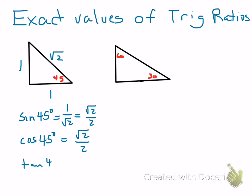The tangent of 45 degrees is the opposite over the adjacent, so that's 1 over 1, which is 1. So these three trig values are the exact values for the sine, cosine, and tangent of 45 degrees.